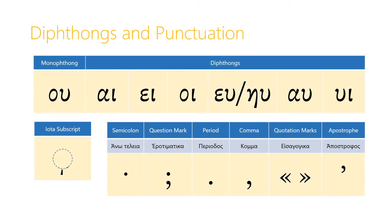Here's an overview of what we're going to be looking at. We have one vowel combination that we refer to as a monophthong, the omicron-upsilon combination. Then we have several diphthongs, combinations of two vowels, and then we have something called the iota subscript, which actually is a vowel but acts differently. Finally, we have our six punctuation marks. So let's look at each of these in detail.